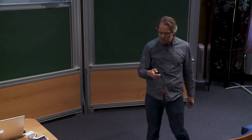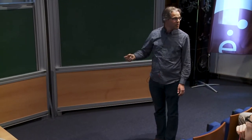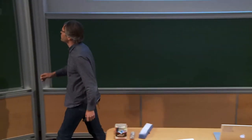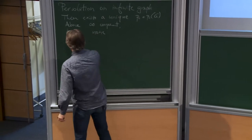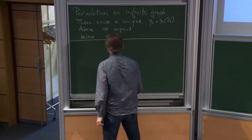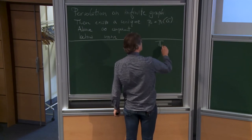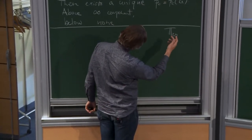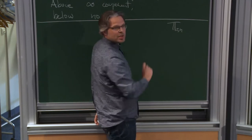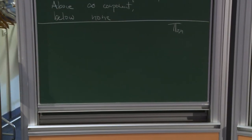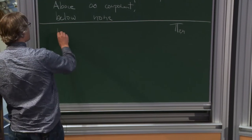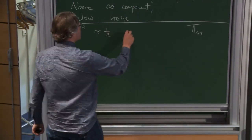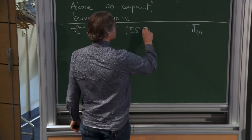For connectivity, p actually has to be pretty large — basically one-half. Let me make a table about the critical value. For the hypercube, which I'll denote T_2^n — the torus with side length 2 in dimension n — the critical value for connectivity is roughly one-half. That's Erdős-Spencer 1979.